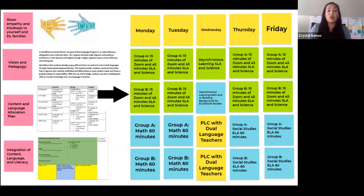We're also going to look at our content and language allocation to make sure that we are teaching social studies and science integrated within ELA — English language arts — and SLA, which is Spanish language arts. This involves that fourth component: the integration of content, literacy, and language. Let's go a little deeper into the sample 50-50 biliteracy schedule via distance learning.